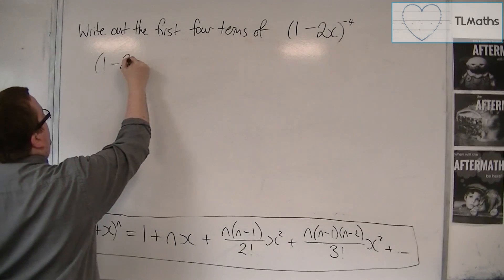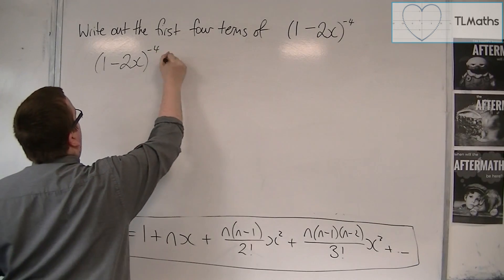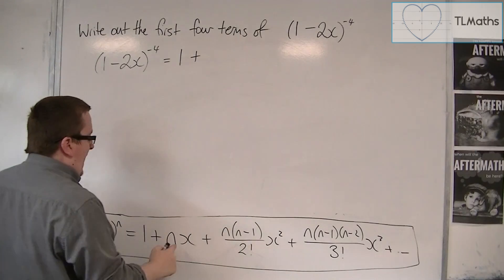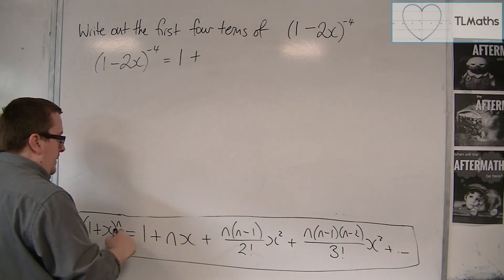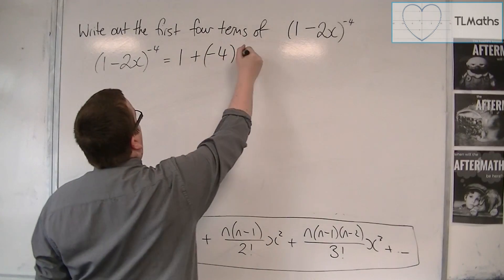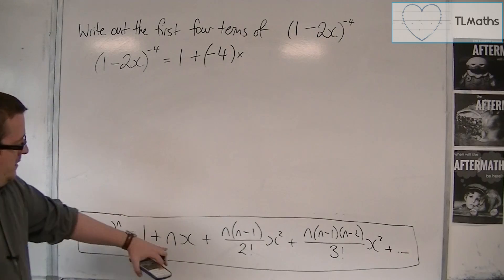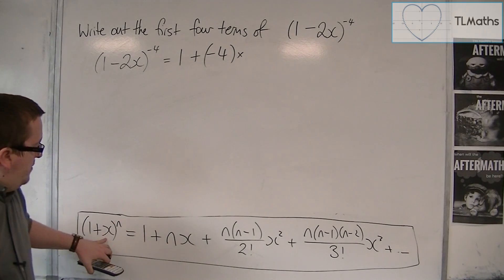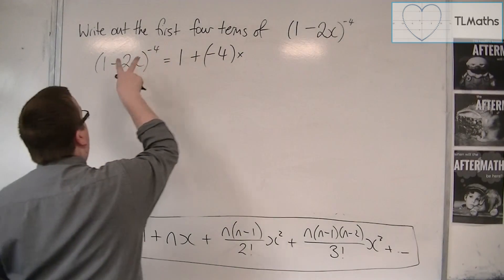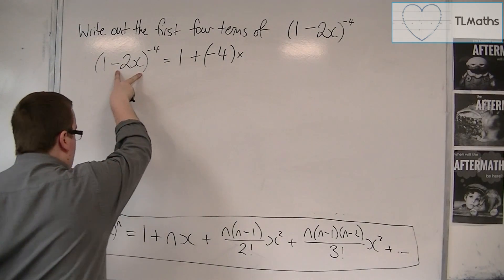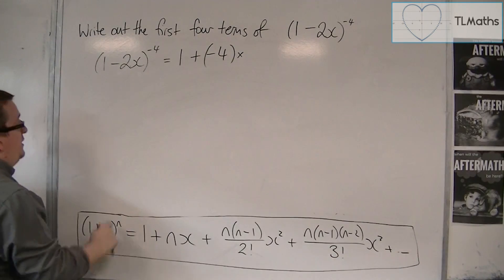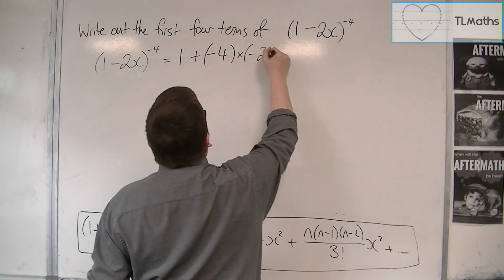So (1-2x)^(-4) is equal to 1 + n times x. Now n, this number here, is -4. So we have -4 times x. That x corresponds with that x there. So this x must correspond with this x that I have here. And the x that I have is -2x. The x here has been replaced with -2x. So that is what must go here.